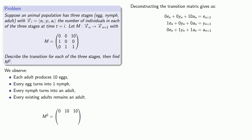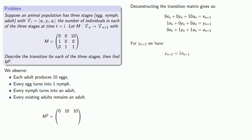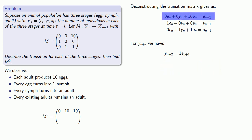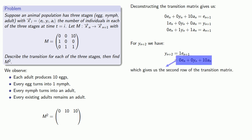For y_{n+2}: the number of nymphs equals the number of eggs in the previous time interval, so y_{n+2} equals 1 times e_{n+1}. And e_{n+1} is 10 times the number of adults at time n. So now I have y_{n+2} in terms of eggs, nymphs, and adults at time n, which gives me the second row of the transition matrix M squared.